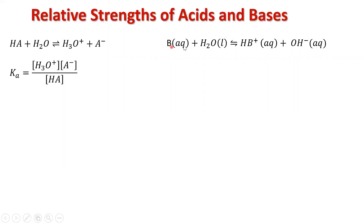The base doesn't have a hydrogen it can donate — that's why it's not an acid — but it will accept a hydrogen ion or proton from the water. So this time, the hydrogen ion is going from the water to the base. When the hydrogen ion goes over to our base, we produce HB⁺, which is our conjugate acid. And when the water gives up its proton, we end up with hydroxide — which is our conjugate base.